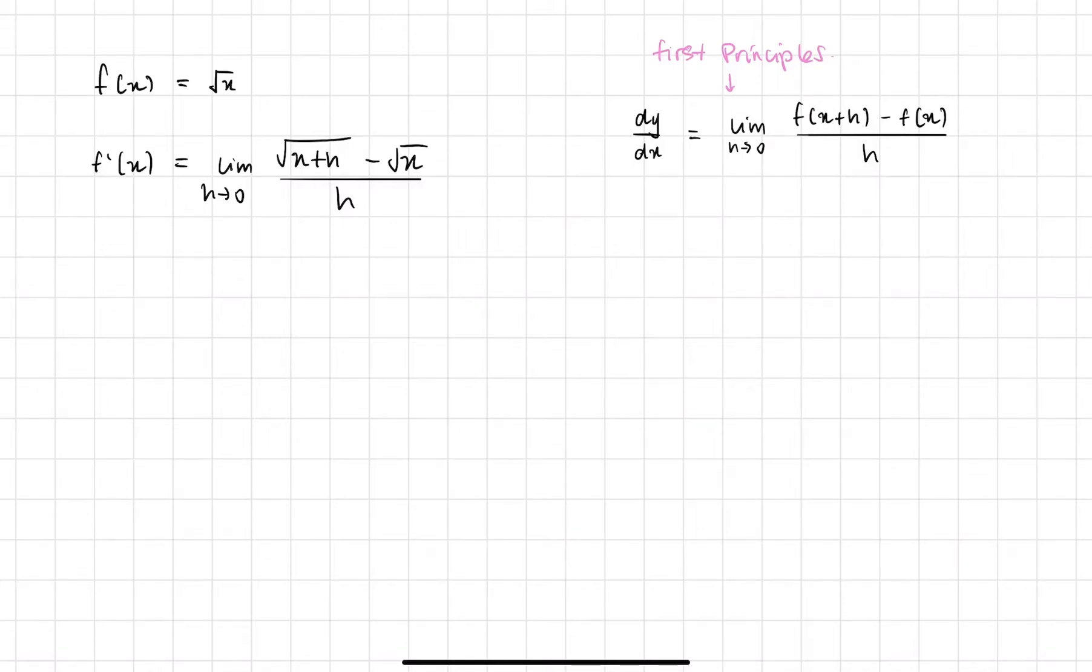And also, at the same time, there's not really much to simplify. Like when you look at this, in the other questions, we had some expanding and canceling and then factorize the h out and then the h is eventually canceled. But this one, there's nothing really that we can do, right? So that's kind of the challenge of this question.